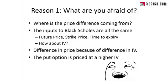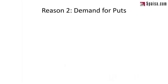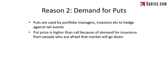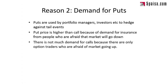Reason number two is the demand for puts. Puts are used by portfolio managers, investors, etc., to hedge against tail events. Put price is higher than call price because of this genuine demand for insurance from people afraid the market will go down. There's not much demand for calls, because only option traders are afraid of the market going up when they're short. Normal investors, portfolio managers, and mutual fund managers are not afraid of the market going up — the fear direction is only down, hence the skew on the put side.